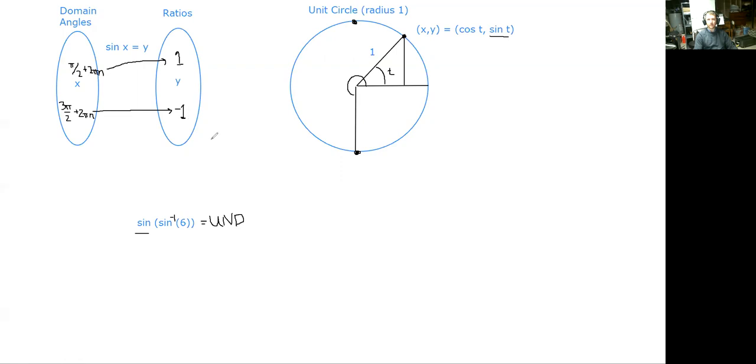Okay. Sine will never take us to something bigger than 1 or smaller than negative 1, because we're working here on the unit circle. And that y-coordinate on the unit circle will never be larger than 1 or smaller than negative 1.